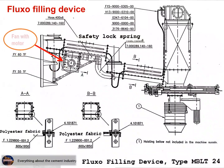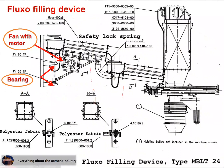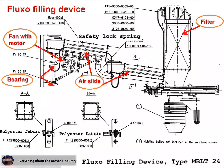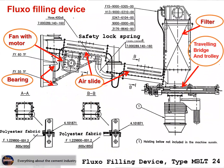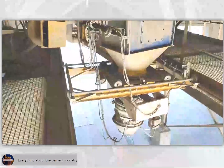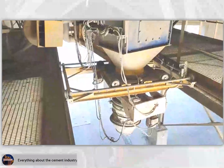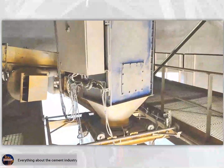Main components: 1. Fan with motor for air slide. 2. Bearing. 3. Air slide. 4. Jet pulse filter. 5. Traveling bridge and trolley. 6. Loading bellows. In this video all components are explained — the Fluxo slide system.